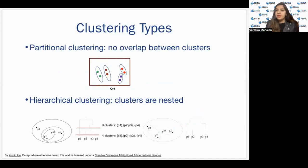So now, what are the different types of clustering techniques? Majorly, there are two types of clustering techniques, which is Partitional Clustering and Hierarchical Clustering. In Partitional Clustering, there is no overlap between clusters. A data object belongs to one and only one cluster. As you can see over here, each data object just belongs to one cluster.